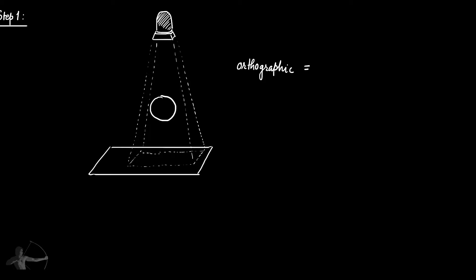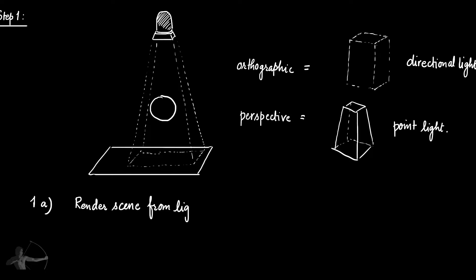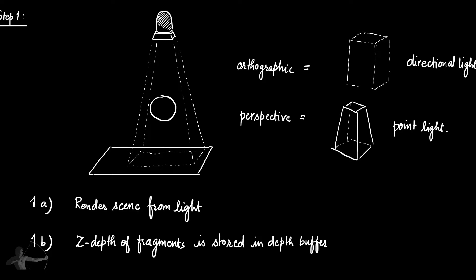There will be a frustum from this camera. This frustum will be orthographic when the light is directional — a square or rectangular frustum — since directional light is considered sunlight, an infinitely large light. The frustum will be perspective when the light is a point light. Sub-step 1a is to render the scene from the light. Sub-step 1b: the z-depth after the z-test for every fragment is stored in the depth buffer as a texture, which we call the light depth map texture, to differentiate it from the depth map rendered by the camera.